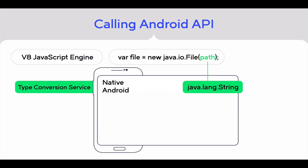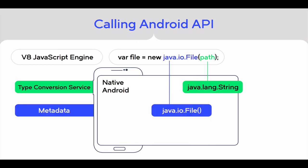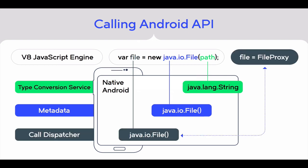The type conversion service converts the path value from the JavaScript string to the native Java object. The metadata will look up the Android API and determine the corresponding native method to call — finding the native constructor for the file class. The call dispatcher executes the call with a dual result: on the Android side we get a new instance of the native file class, while on the NativeScript side we get a custom JavaScript object serving as a proxy to the native Android object.